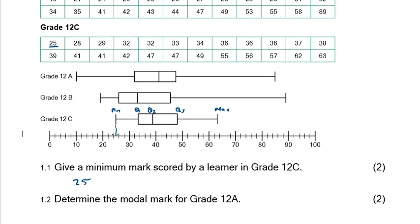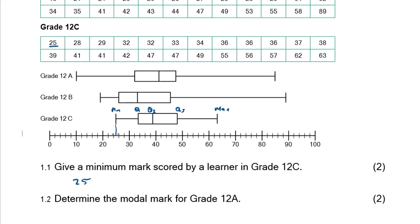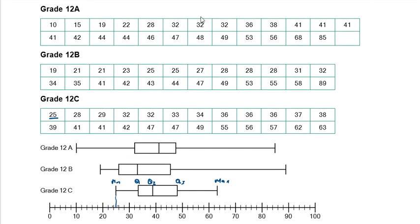Question 1.2: Determine the modal mark for 12a. We need to look at the table for the mode of 12a. Fortunately, the values are already in ascending order, so it's easy to see the mode is 41, because 41 appears once, twice, three times, four times. So the modal value for 12a is 41.